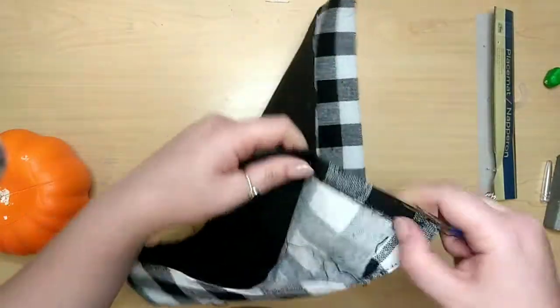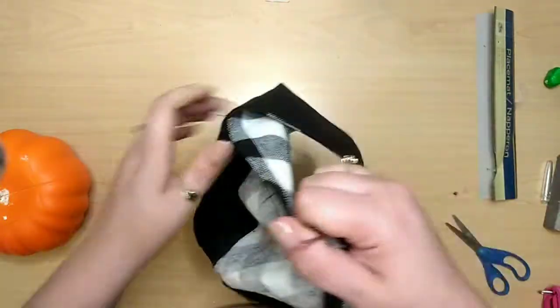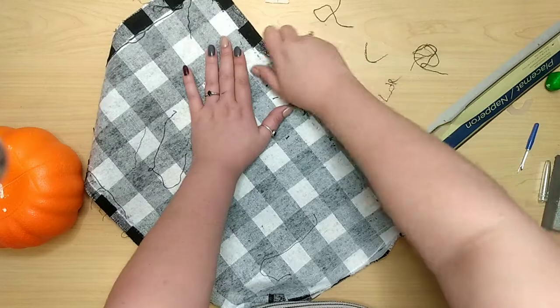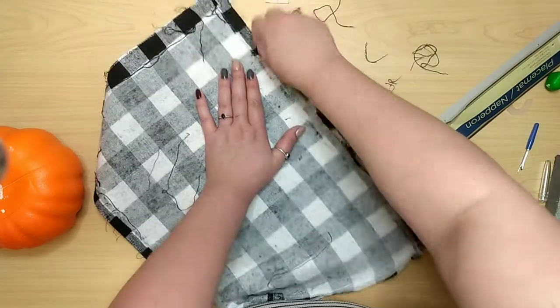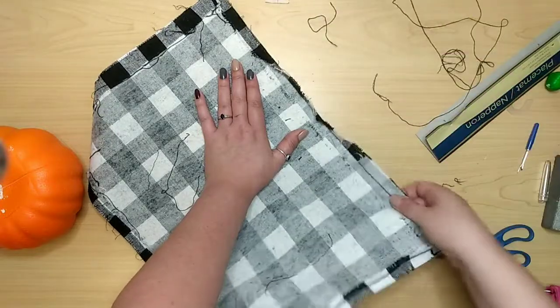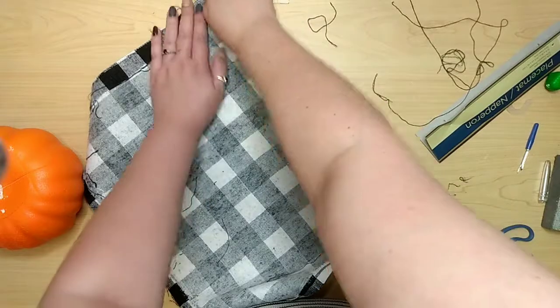For this project I used this placemat from the Dollar Tree. It's got a beautiful buffalo check pattern with two pieces of fabric, so I took a seam ripper and pulled that apart so it would be easier to work with. I'm pulling these hems open, removing any excess thread, pulling the hems apart so I have more fabric to work with.